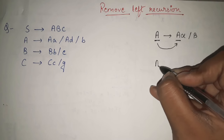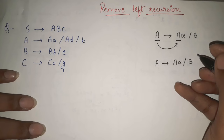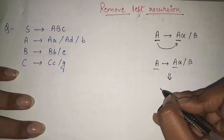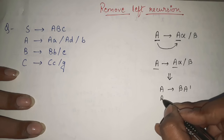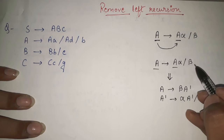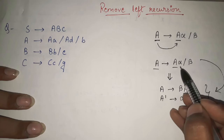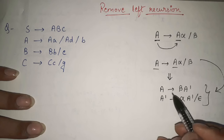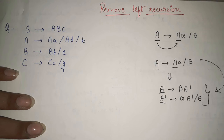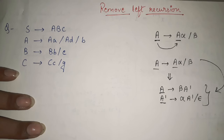The formula is: whenever we are having A gives A alpha or beta, any production like this and we want to remove the left recursion, we apply the formula: A gives beta A dash, and A dash gives alpha A dash or null. This means this one production can be converted into these two productions, and as you can see, in the newly made productions there is no left recursion — neither in A nor in A dash. So converting this production into these two productions, we can remove the left recursion, and the meaning remains the same.